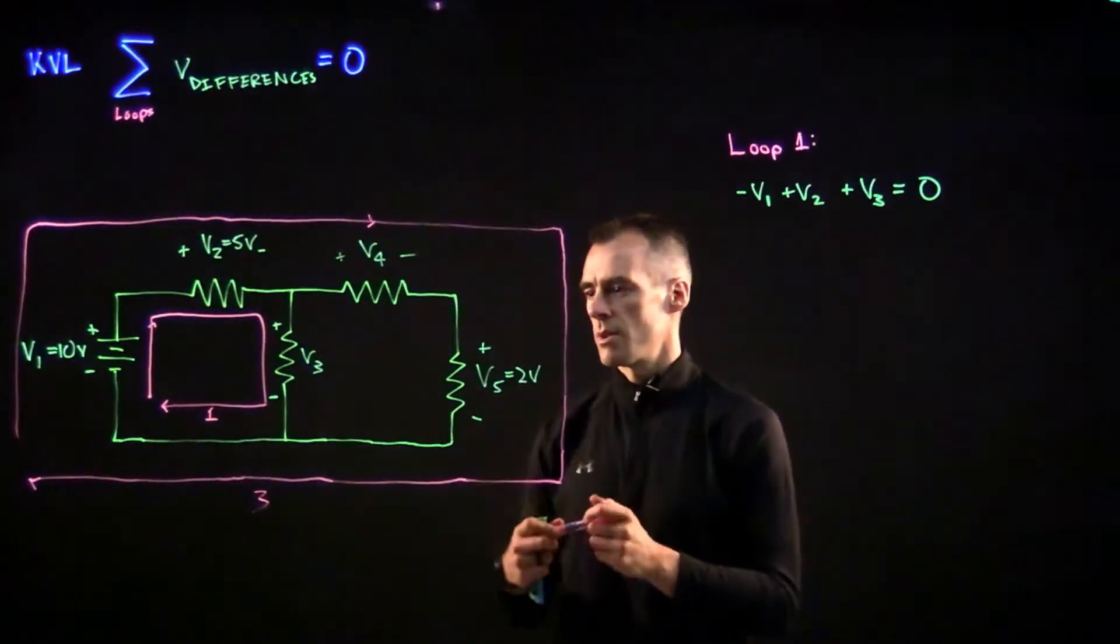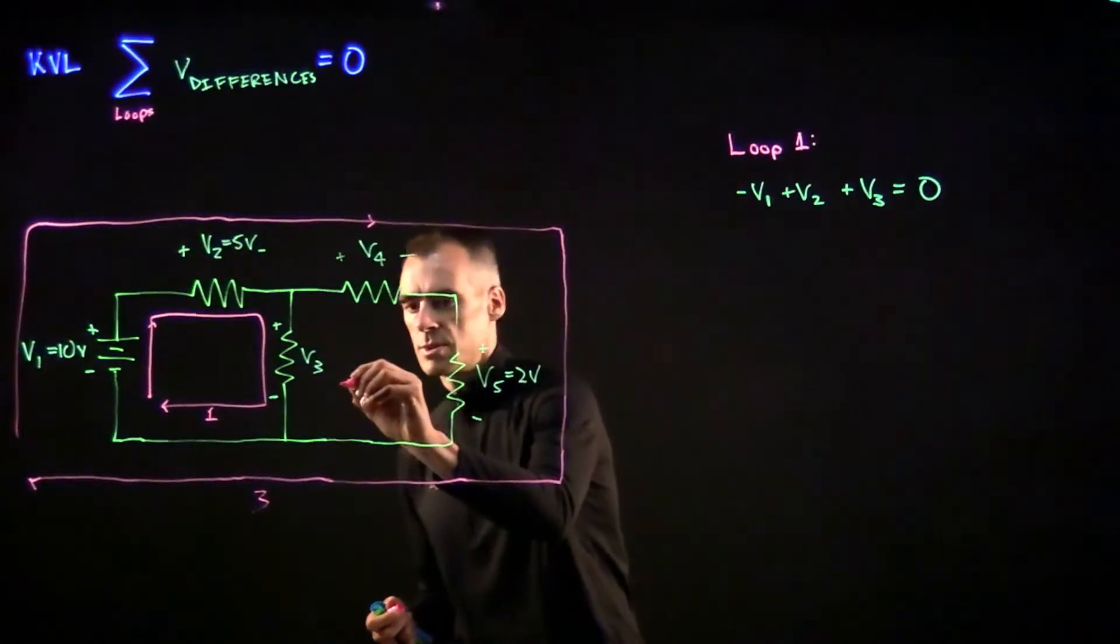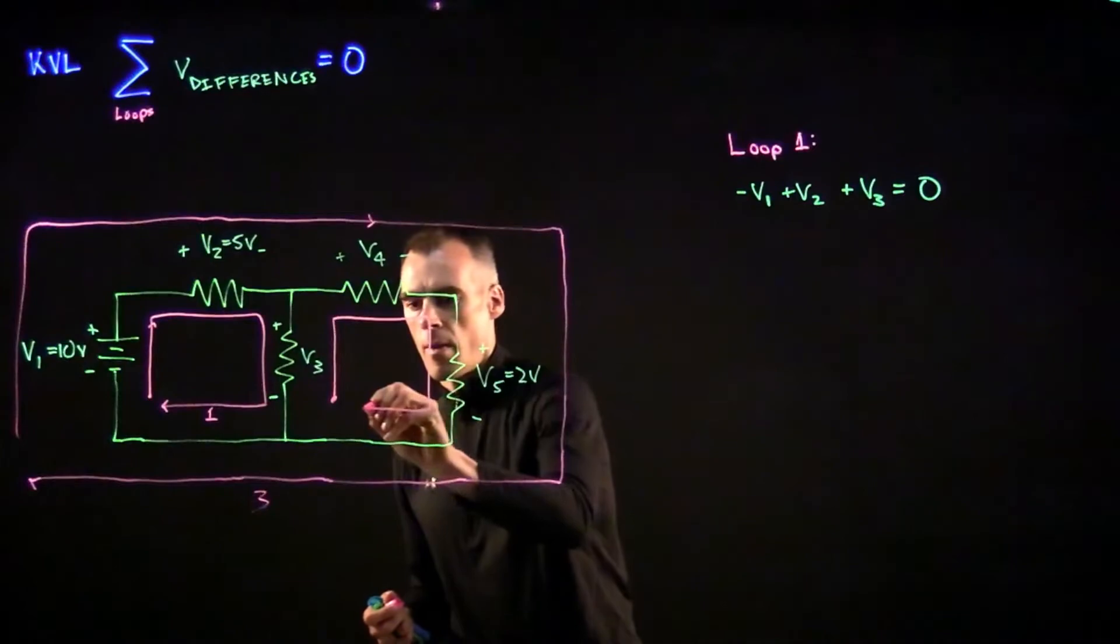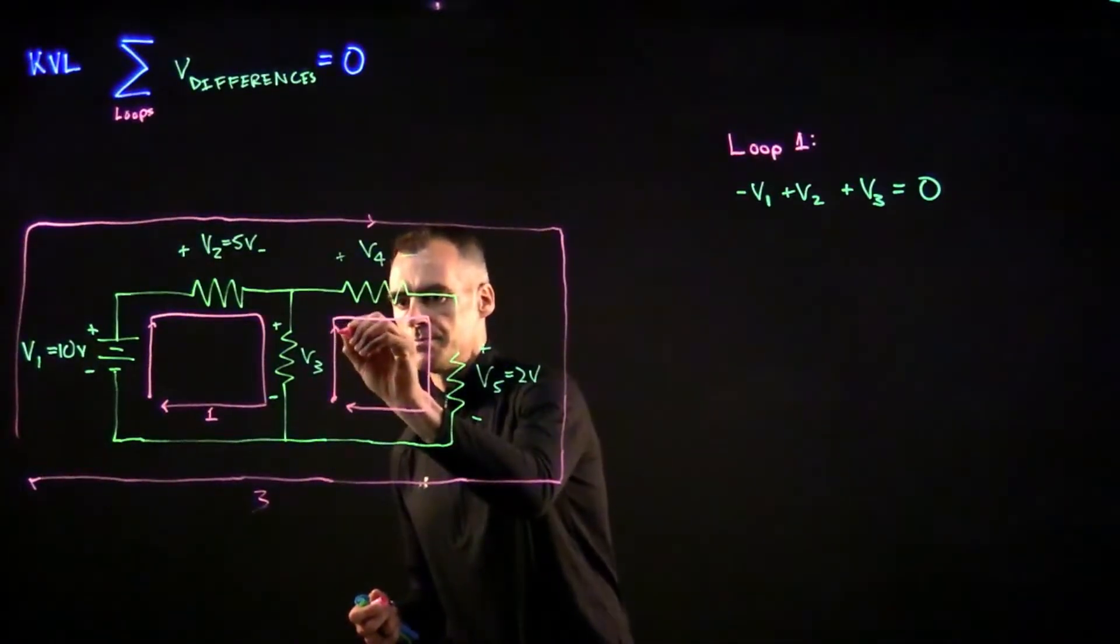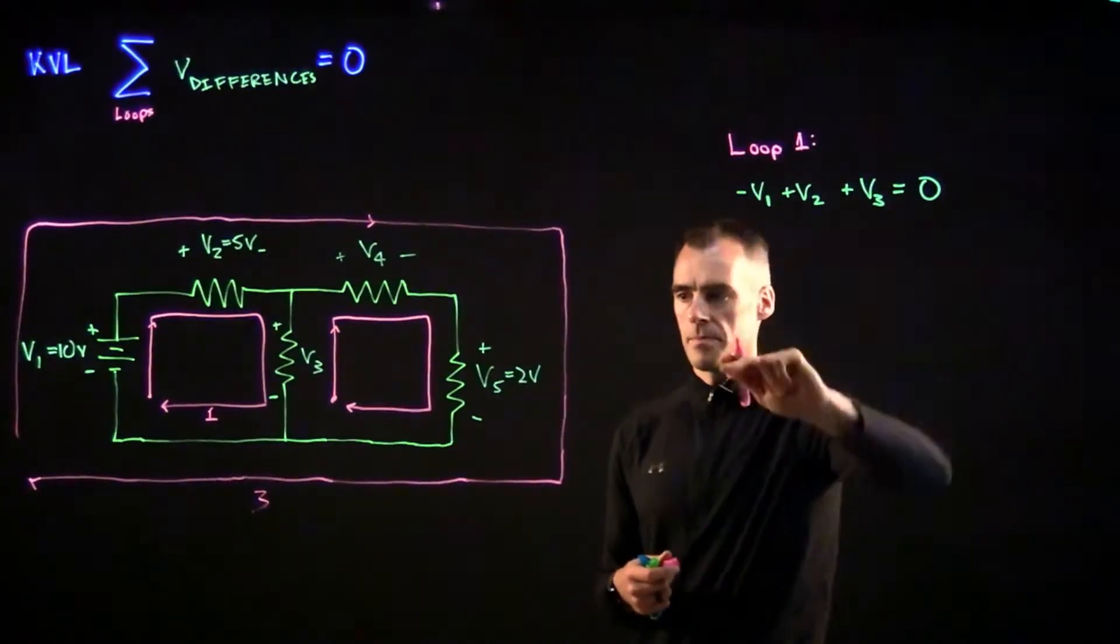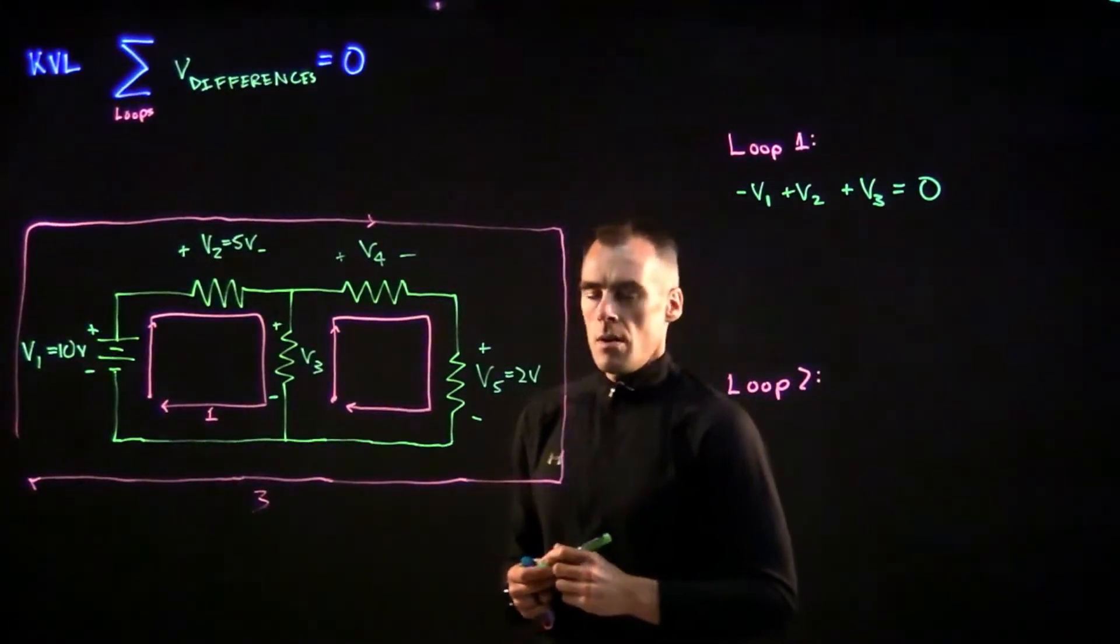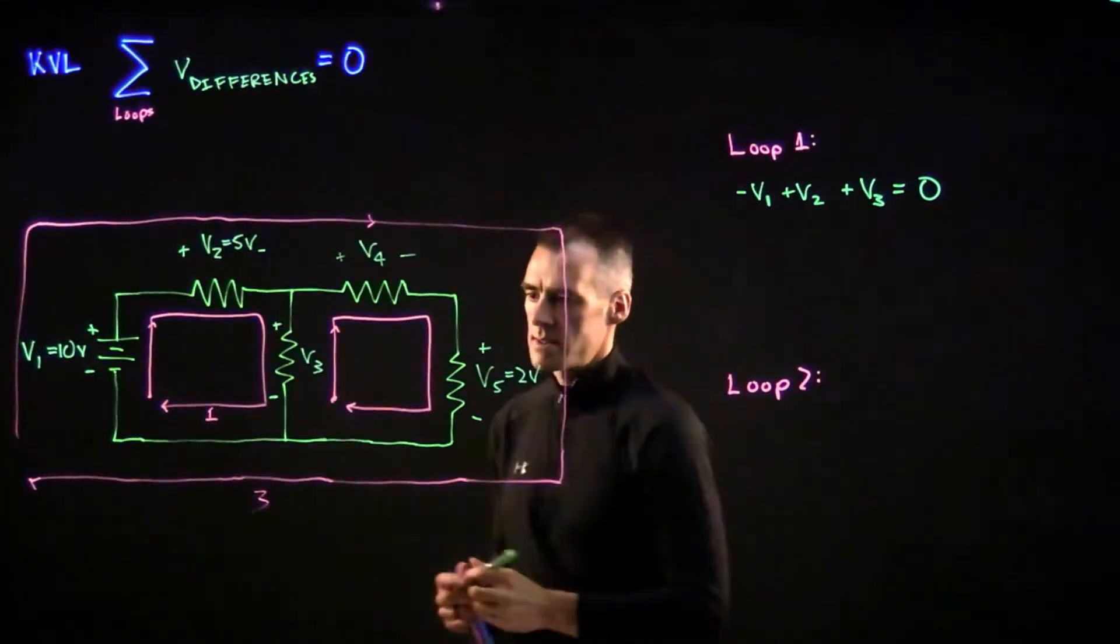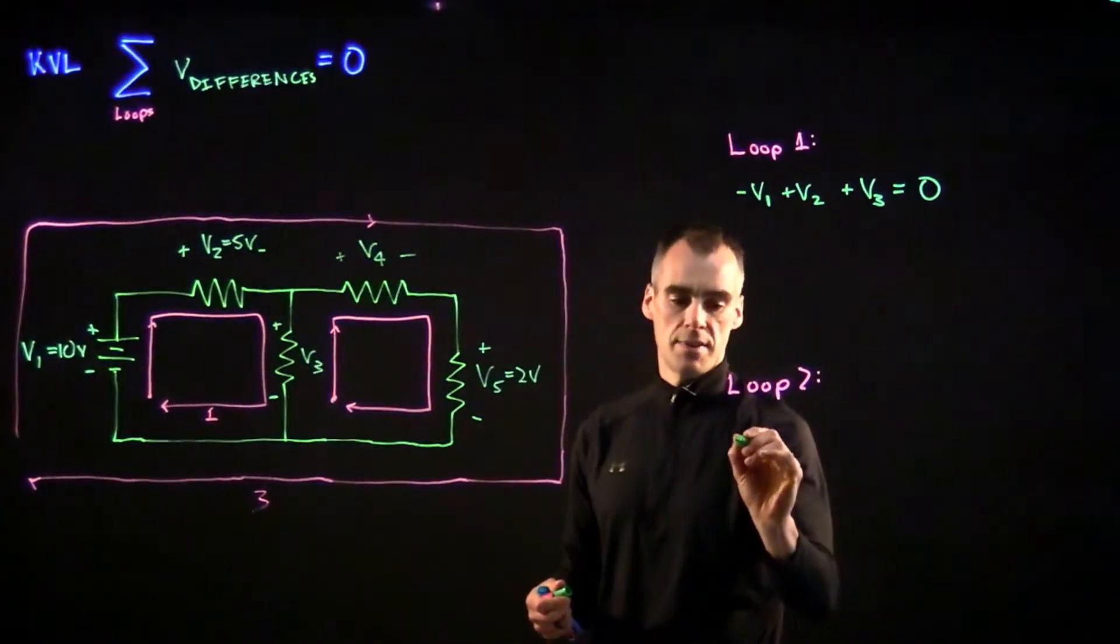So say we start here, we're going to go up around this way, loop two. Let's go ahead and write that out here. Okay, so for loop two, we're starting here and we're going up, and the first thing we hit is that minus sign, so we're going to start off with minus V3.